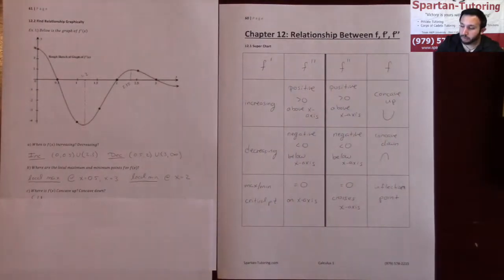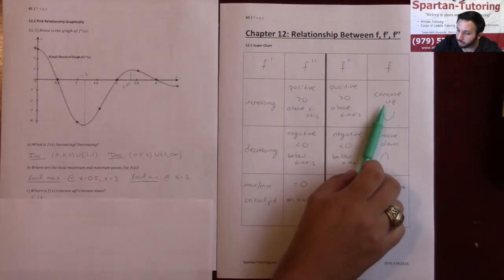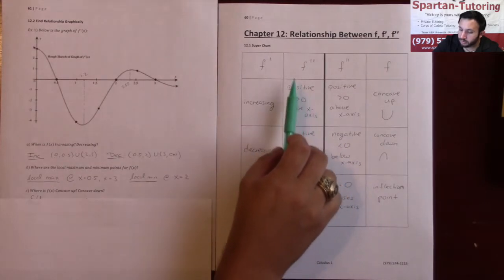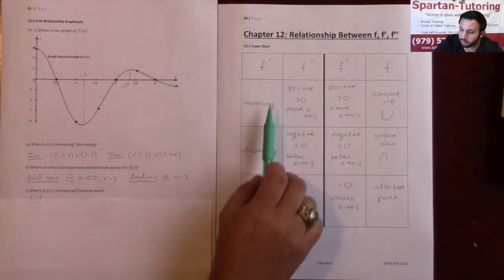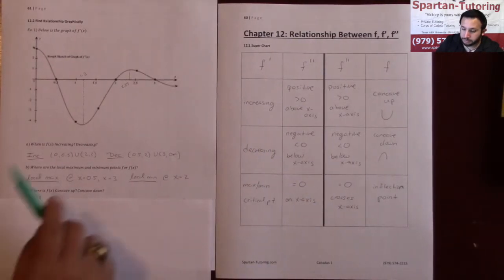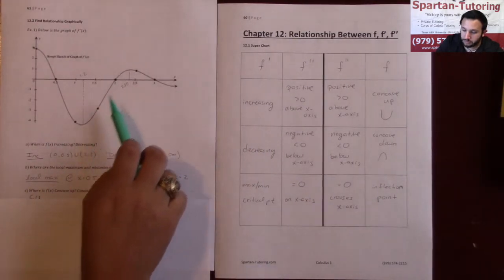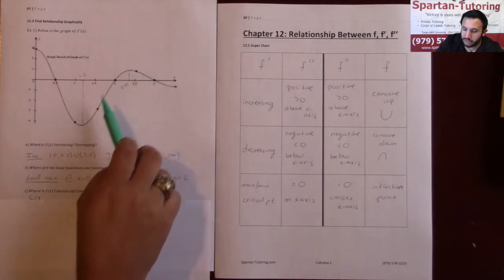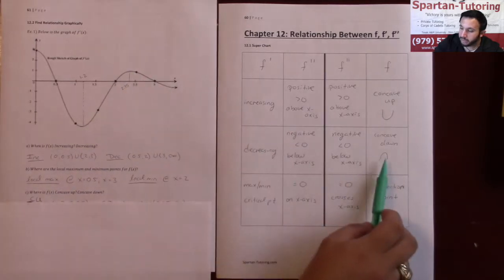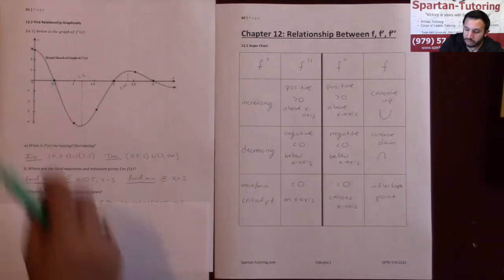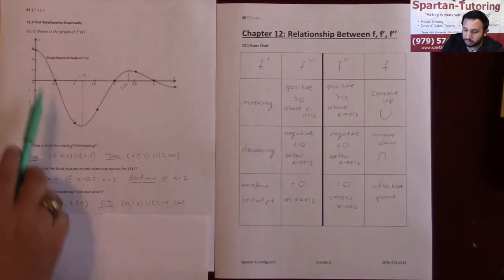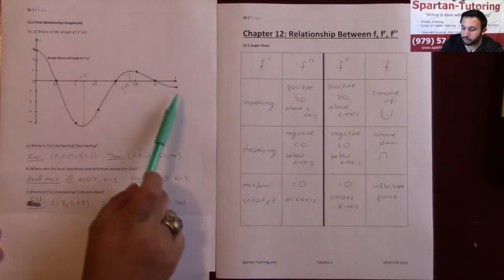F is concave up when the second derivative is positive, but the second derivative is positive whenever your derivative is increasing. So I'm going to be concave up where my derivative is increasing, from 1.2 up to 2.35. I'll be concave down when my derivative is decreasing, so that's from 0 to 1.2 and then from 2.35 out to infinity.